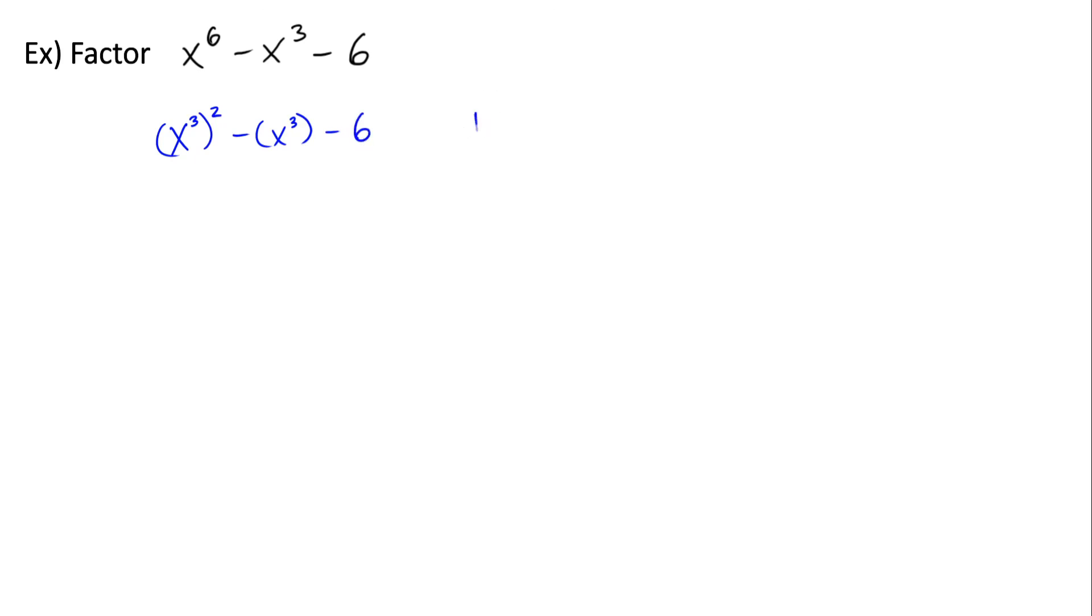And now we'll say let u equal x cubed. And we'll rewrite this as u squared minus u minus 6. And now this is a polynomial that's pretty simple to factor. We need two factors of negative 6 that add to negative 1. So that'll be negative 3 and positive 2. Now we can factor by grouping.